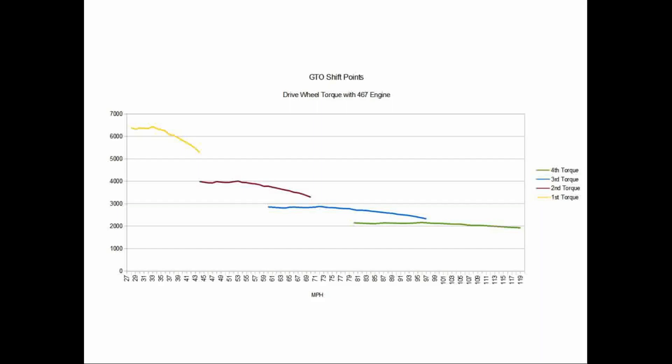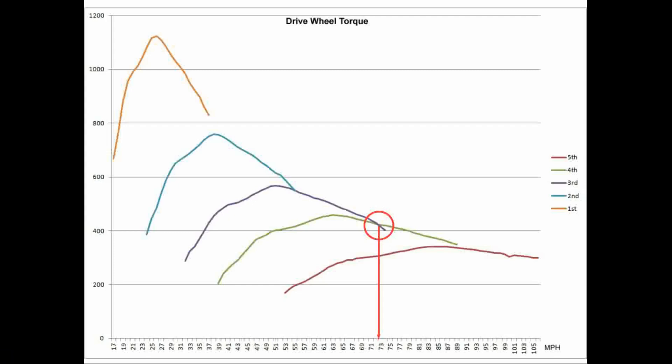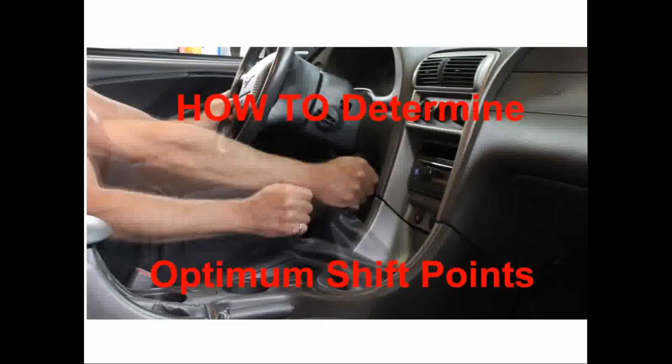So, to summarize, for maximum acceleration, if your wheel torque curves don't intersect, you want to shift at maximum engine RPM in each gear. If you have wheel torque curves that do intersect, you want to shift at the engine RPM corresponding to the vehicle speed where the curves intersect. But, wait, you say you forgot to talk about optimum shift points for automatic transmissions.